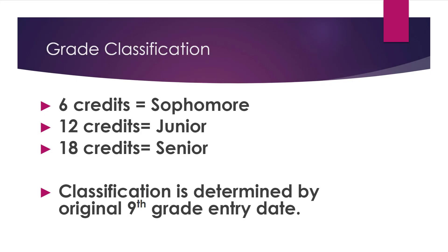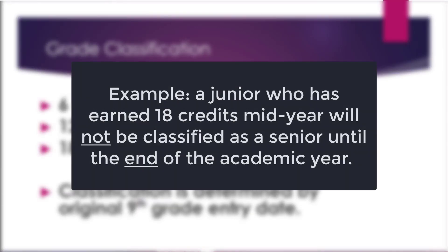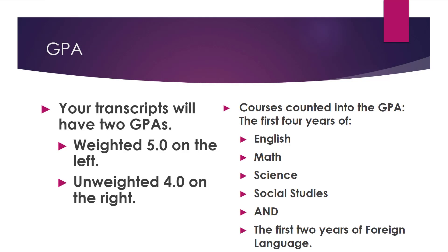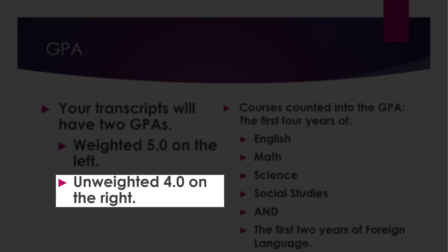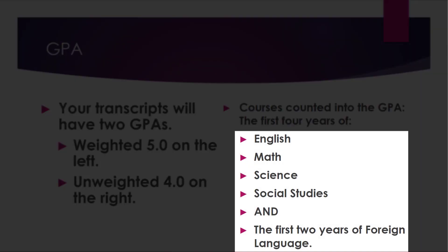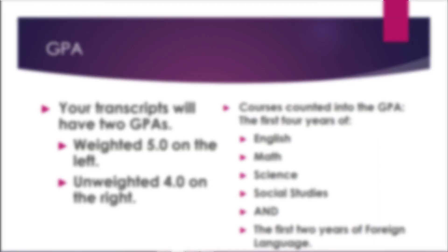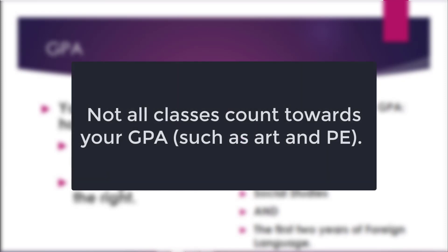A credit is a class that has been successfully completed. Classification is determined by original 9th grade entry date. For example, a junior who has earned 18 credits mid-year will not be classified as a senior until the end of the academic year. MISD students earn two GPAs: 5-point, which is weighted, and 4-point, which is unweighted. It's important to note that not all classes count towards your GPA, such as Art and PE.